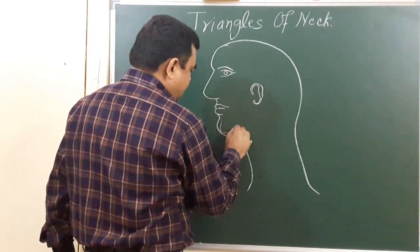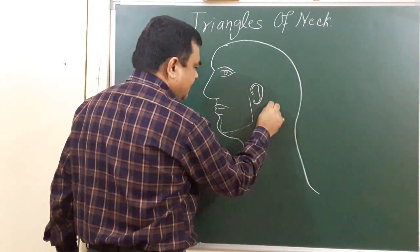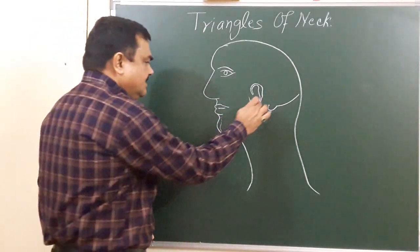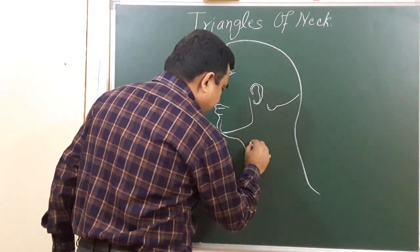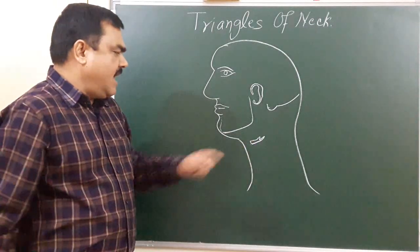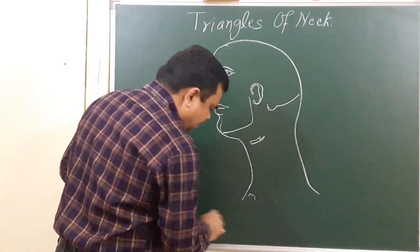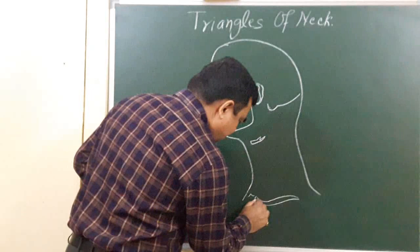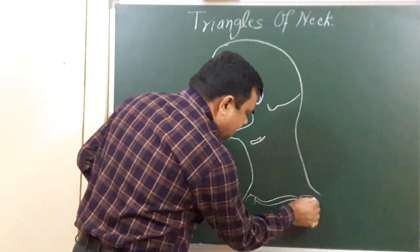In this diagram you can see the position of the mandible and the position of the mastoid process. This is the external occipital protuberance. This is the level of the mastoid process, this is the level of the mandible, and here is the position of the hyoid bone.